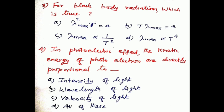Question number three: for black body radiation, which is true? Option a: λmax² × T = a, option b: T × λmax = a, option c: λmax ∝ 1/T², option d: λmax ∝ T⁴. For black body radiation, T × λmax = a (Wien's displacement law), so option b is the correct answer.